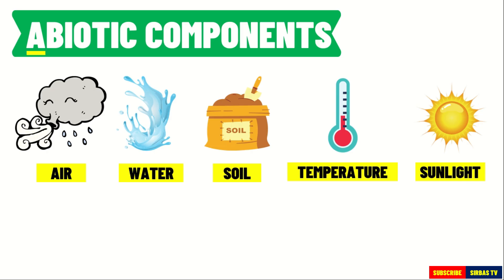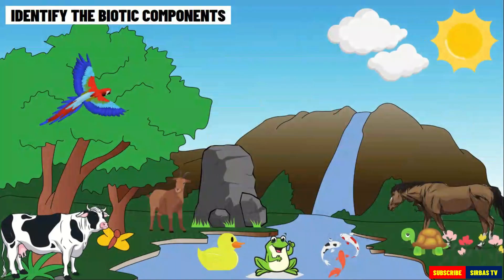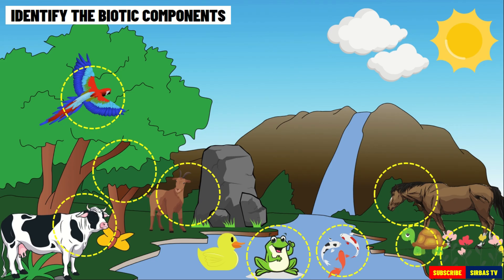These abiotic components have important roles in the survival of living organisms in an ecosystem. Take a look at this picture. What are the different biotic components that you can identify? Correct! The biotic components in this ecosystem are the following: trees, flowers, frog, fish, bird, cow, goat, horse, turtle, duck, and butterfly.